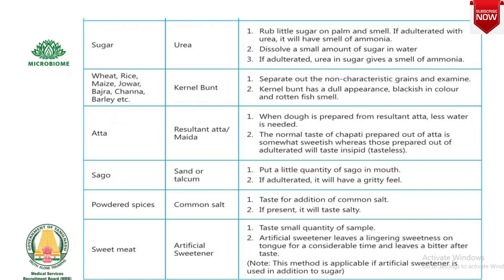For wheat, rice, maize, jowar, bajra, chana, and barley adulterated with kernel bunt: separate out non-characteristic grains and examine. Kernel bunt has a dull appearance, is blackish in color, and has a rotten fish smell. For atta adulterated with resultant atta or maida: when dough is prepared, less water is needed. Normal chapati from pure atta is somewhat sweetish, whereas chapati from adulterated atta tastes insipid — that is, tasteless.